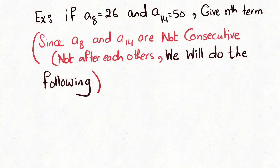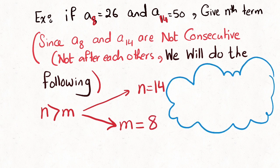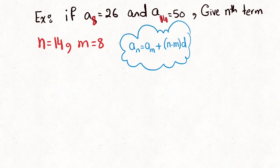We assign n = 14 as the bigger number and m = 8 as the smaller number. Then recall the equation: a_n = a_m + (n − m) × d. Apply the values as shown and simplify to find the common difference d.